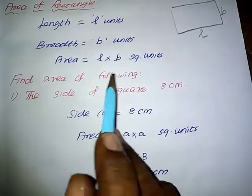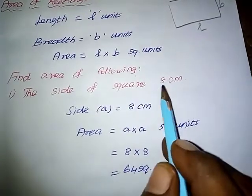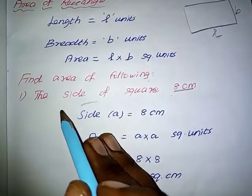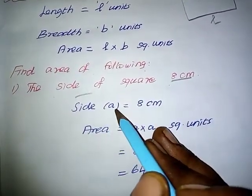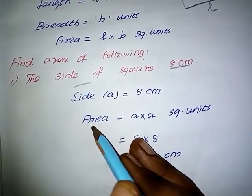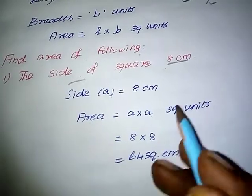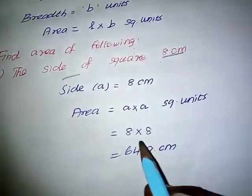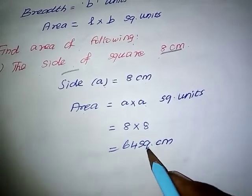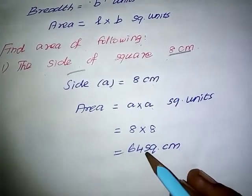Find area of the following. Question number one: the side of a square is 8 centimeters. Solution: side a equals 8 centimeters. Area equals a into a. So 8 into 8 gives 64 square centimeters. The area of the given square is 64 square centimeters.